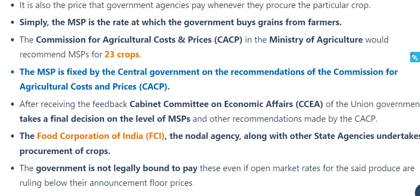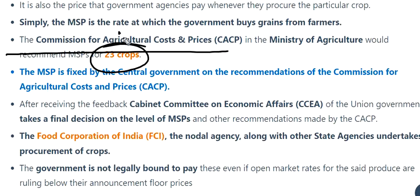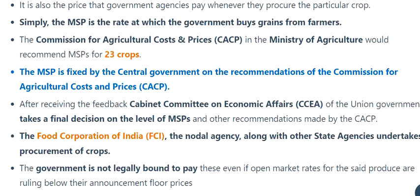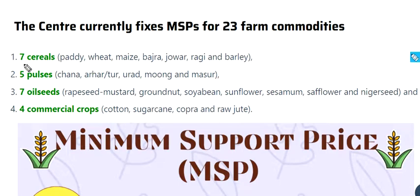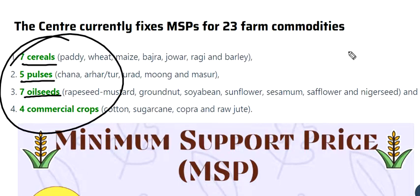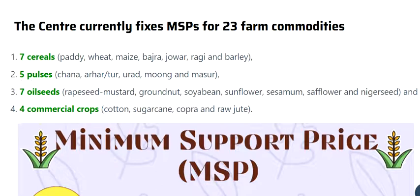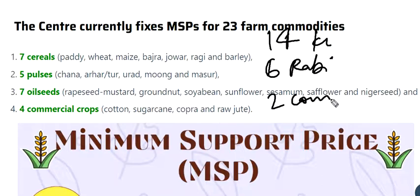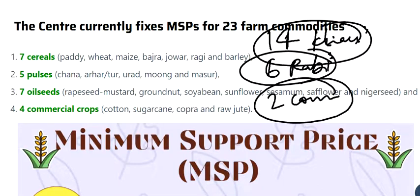CACP recommends MSP for 23 farm commodities: 7 cereals, 5 pulses, 7 oilseeds, and 4 commercial crops — comprising 14 Kharif crops, 6 Rabi crops, and 2 commercial crops.